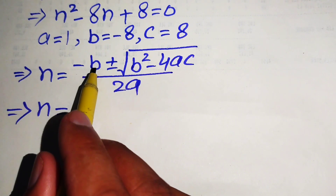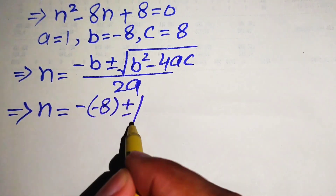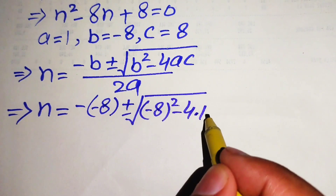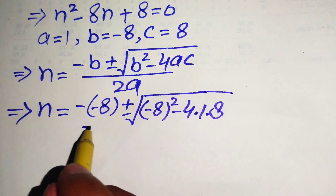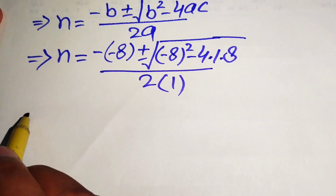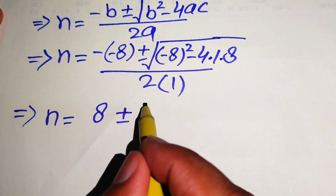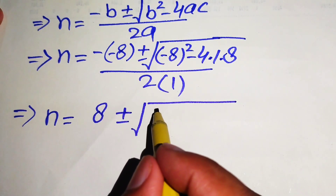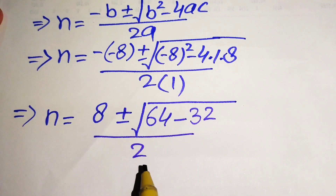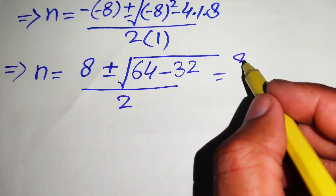We get n equals minus b, where b is minus 8, plus or minus square root of b squared — that is minus 8 squared — minus 4 times a, which is 1, times c, which is 8, all divided by 2 times a, which is 1. The minus times minus gives us positive 8, and minus 8 squared becomes 64, minus 4 times 8 is 32, divided by 2.